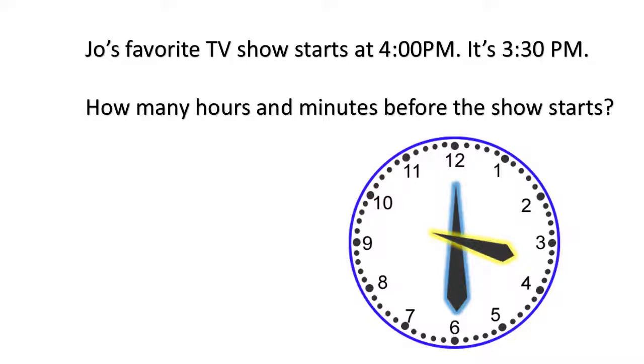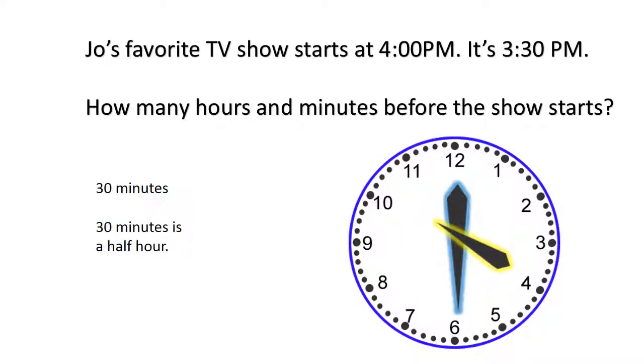Joe's favorite TV show starts at 4 p.m. It's 3:30 p.m. How many hours and minutes before the show starts? 30 minutes. 30 minutes is a half hour.